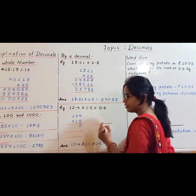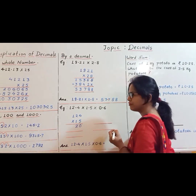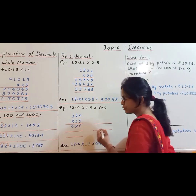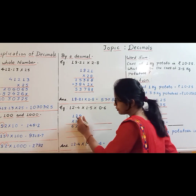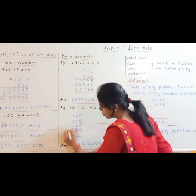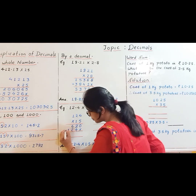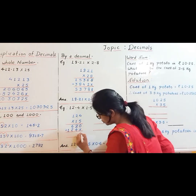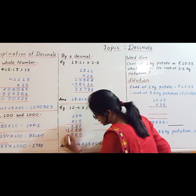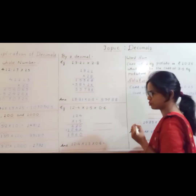Without decimal point it will be 124 and 15. Now multiply: 5 fours are 20 carry 2, 5 twos are 10 plus 2 is 12 carry 1, 5 plus 1 is 5 plus 1 is 6. Second row: put a cross, 1 four is 4, 1 two is 2, 1 one is 1. Add the rows: 0, 4 plus 2 is 6, 6 plus 2 is 8, and 1. So 1860 is the product.